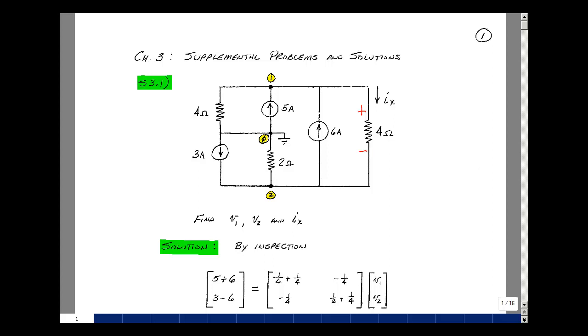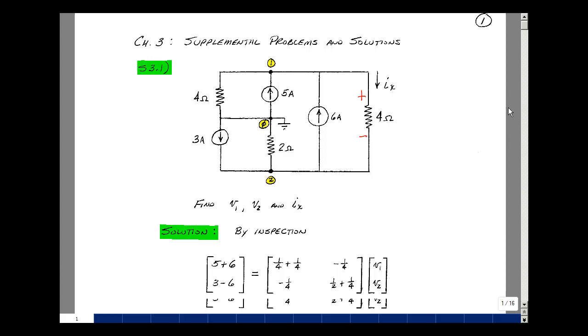In the Chapter 3 notes, we had an inspection technique for forming node equations. So let's use that. Since I have two nodes, I'll form a blank 2x2 matrix, solving for V1 and V2, and a blank two rows, one column. On the left-hand side, that's where my sources are going to go. These are where the conductances are going to go.